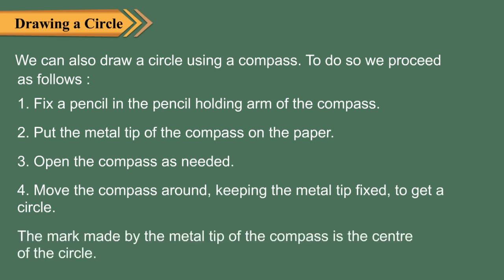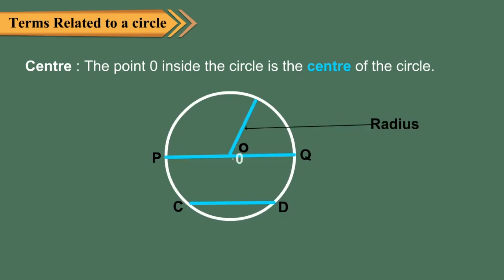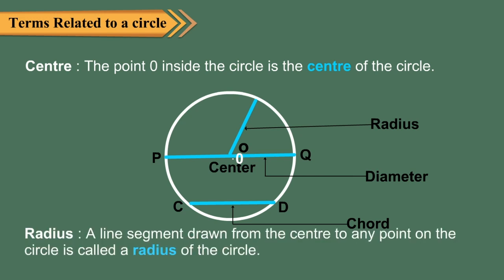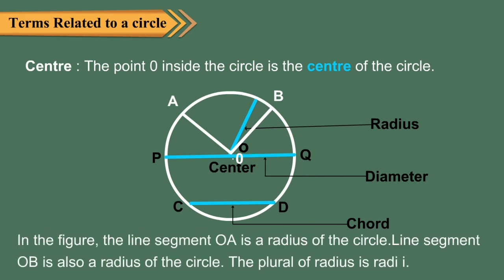The mark made by the metal tip of the compass is the center of the circle. Terms related to a circle — center: the point O inside the circle is the center of the circle. Radius: a line segment drawn from the center to any point on the circle is called a radius. In the figure, line segments OA and OB are both radii of the circle. The plural of radius is radii.